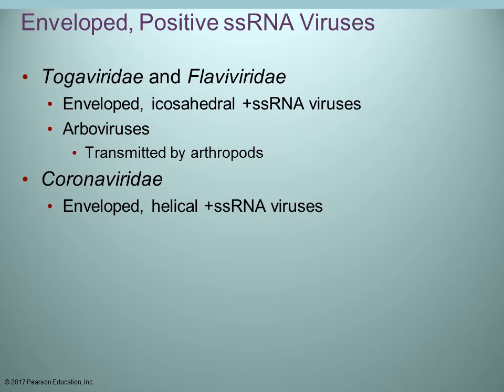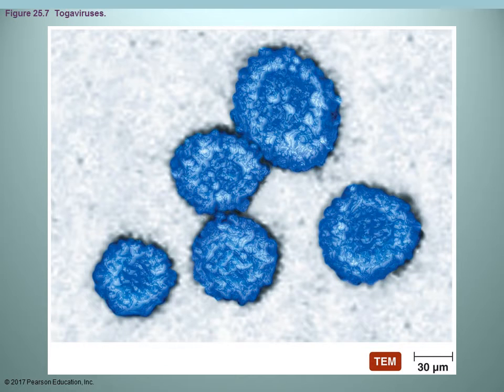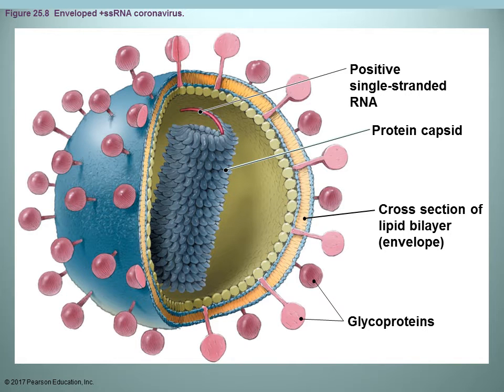Looking at enveloped single-stranded positive RNA viruses: togaviridae and flaviviridae are both enveloped single-stranded positive viruses. There's an arbovirus family transmitted by arthropods. The coronaviridae are enveloped but helical in shape. We classify them by whether they're enveloped or not and by the shape of the capsid — distinguishing icosahedral versus helical shapes. Here are togaviruses and an example of a coronavirus.